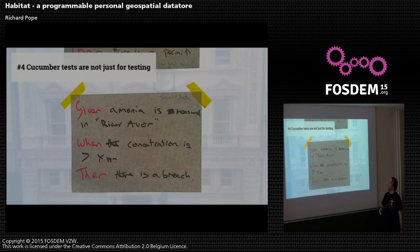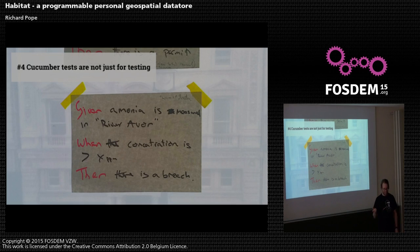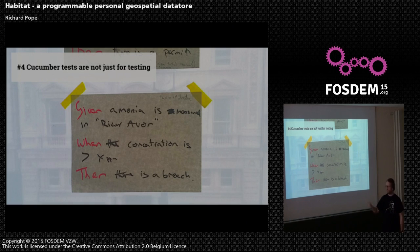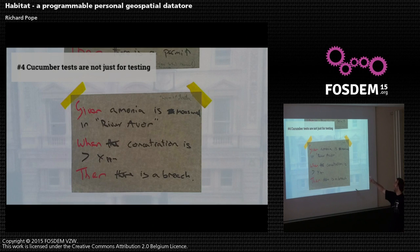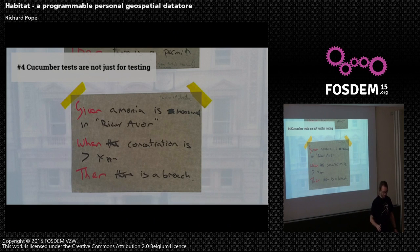Number four: is everyone familiar with cucumber tests? They are human-readable software tests taking the form 'given, when, then' — like 'given when I log in, I should be able to see my account page.' But you can potentially repurpose these as a kind of natural language interface onto data. This is a photograph from a hack day the UK Environment Agency organised — the idea of using cucumber tests to run over environmental data, so you can say 'when there's a certain amount of ammonia in the River Avon, then there's a legal breach.'